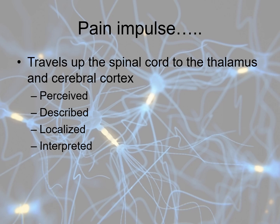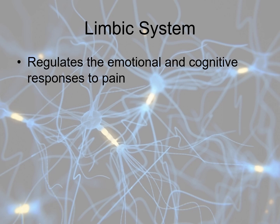The pain impulse travels up to the spinal cord, where it's perceived, described, localized, and interpreted. This is one reason pain is very much a subjective experience. We don't know a patient's previous experience with pain or how other neurotransmitters are being stimulated. For some people, pain creates anxiety and depression, which is why many neurotransmitters involved in pain are also involved in anxiety and depression. The limbic system regulates the emotional and cognitive response to pain, so substantial pain in one patient may cause little or no pain in another.